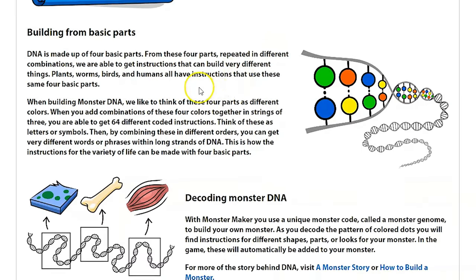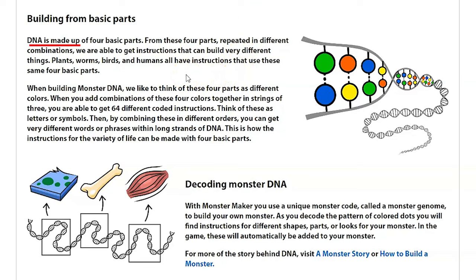What is DNA? Well, DNA is made up of four basic parts, and they're repeated in different combinations so that it can make a whole lot of different instructions. That allows us to have plants grow, worms crawl, birds fly, and humans — well, you know what humans do. Lots of things. And that's all possible because of the genome and DNA.